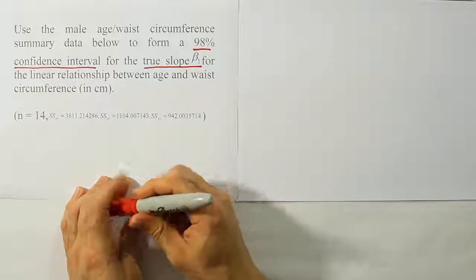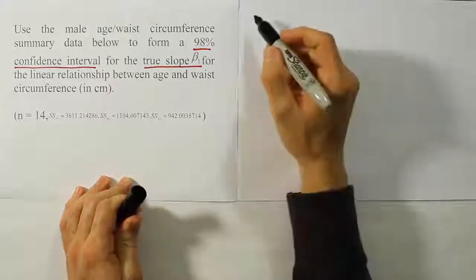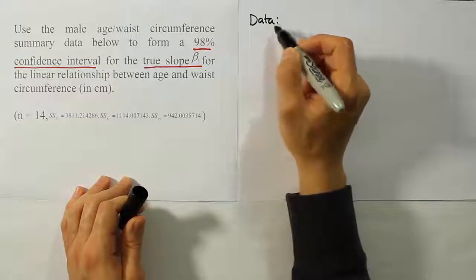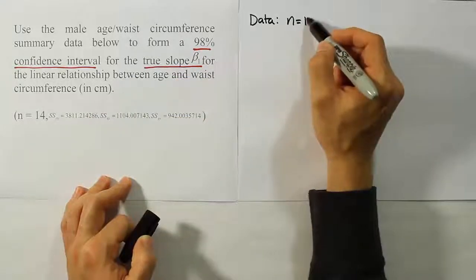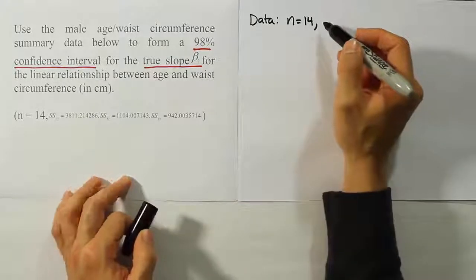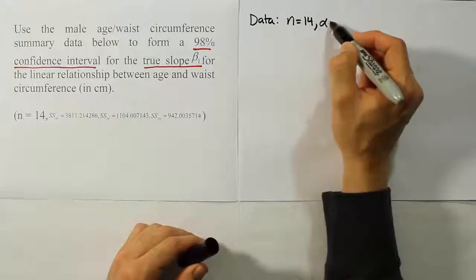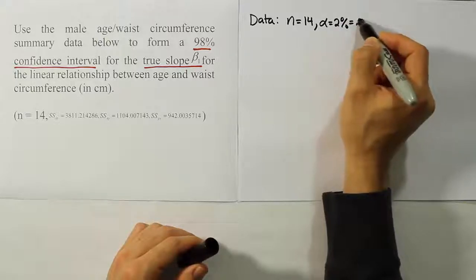When you're working with a confidence interval for the slope, one of the things you should write down in the first step is the n and the alpha. So n here, according to the problem, is 14. And the confidence level is 98% and alpha is therefore 2%, so alpha is 0.02.